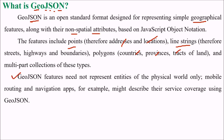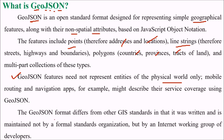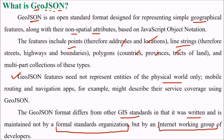GeoJSON features need not represent entities of the physical world only. Mobile routing and navigation maps, for example, might describe their service coverage using GeoJSON. The GeoJSON format differs from other GIS standards in that it was written and is maintained not by a formal standards organization, but by an internet working group of developers.